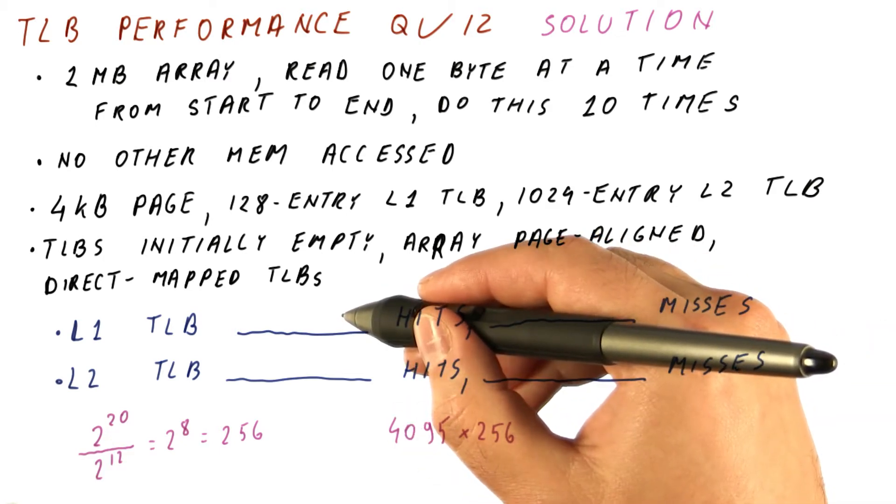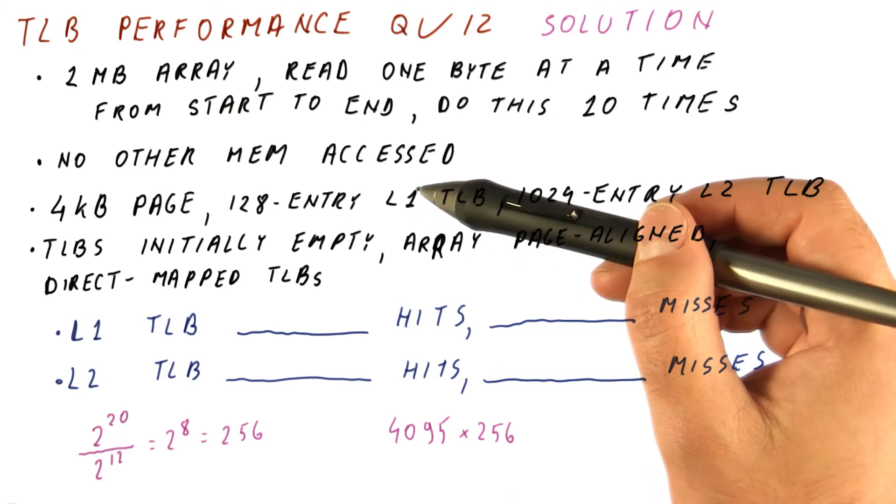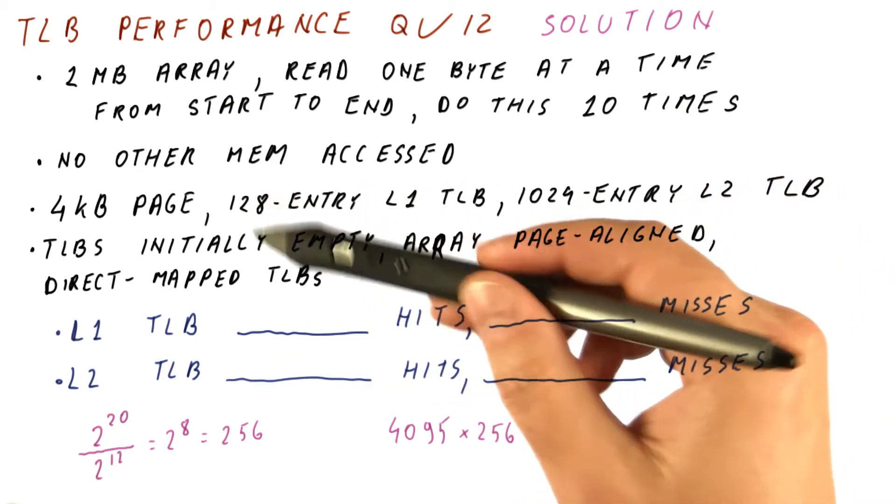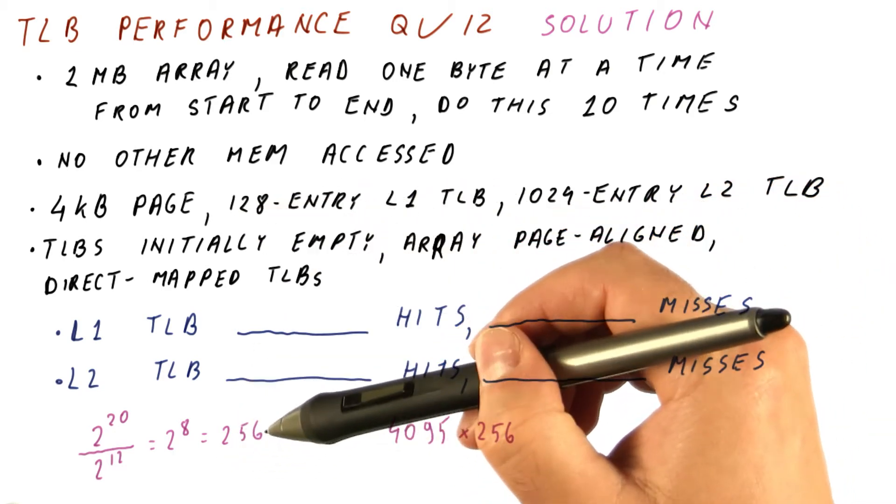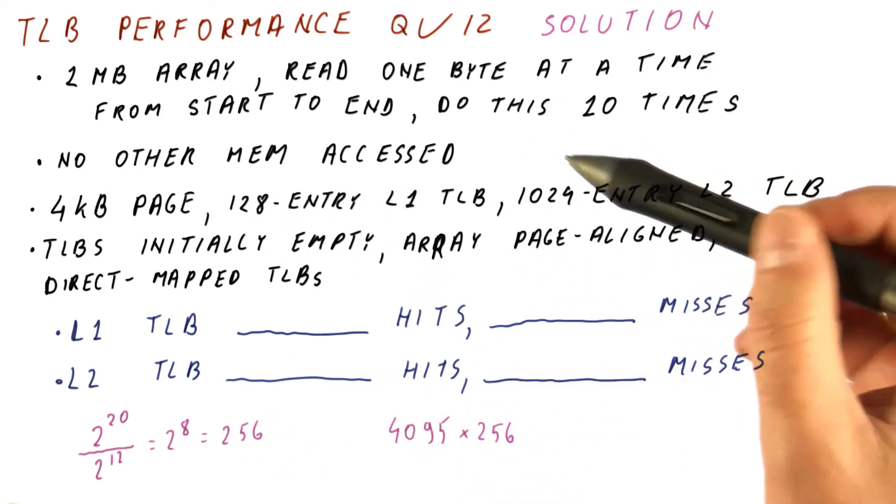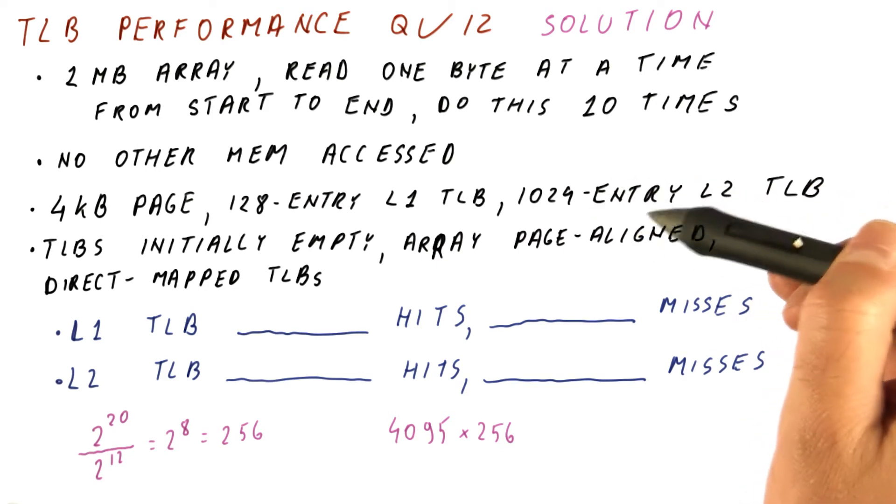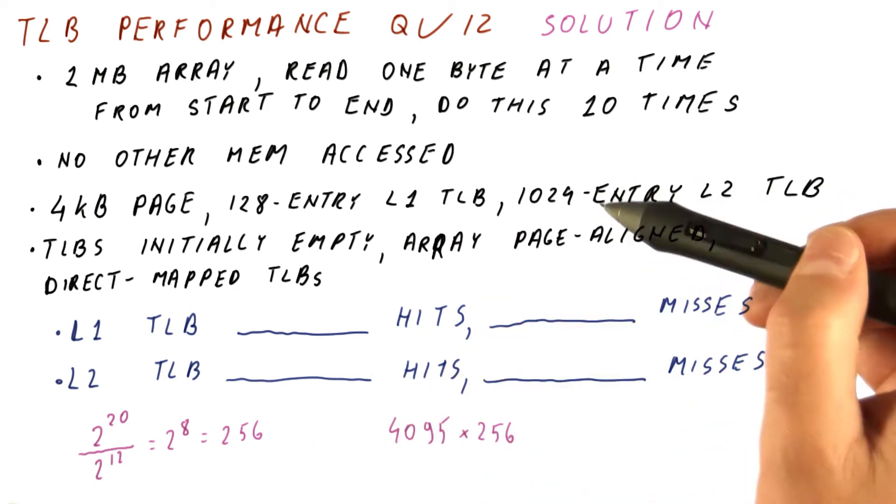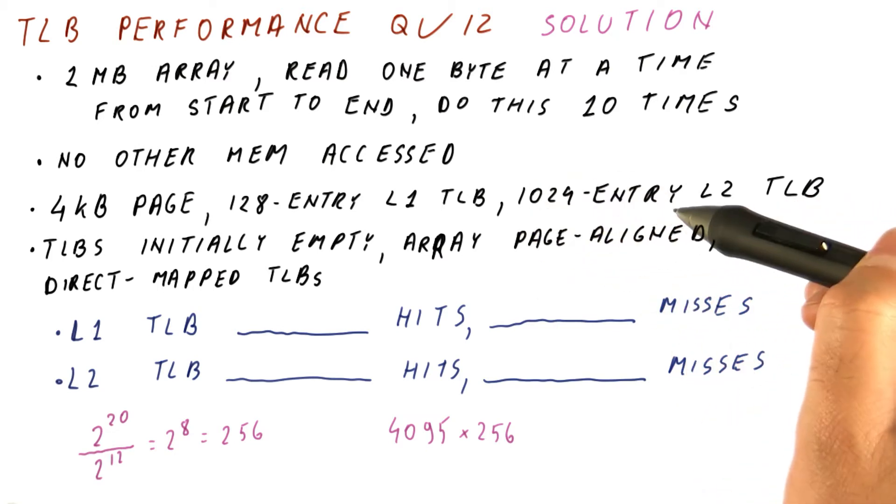After this first sweep, the level one TLB contains the entries for the second half of the array. Because the array needs 256 pages, we only have 128 entries. The level two TLB, however, contains the mappings for the entire array, because it still has enough elements to hold them.